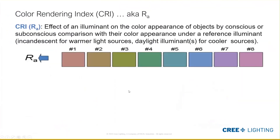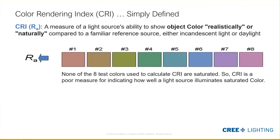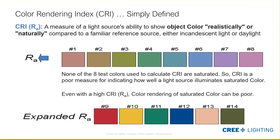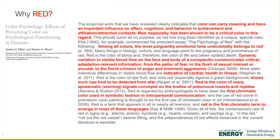CRI is simply a measure of a light source's ability to show object color reasonably, realistically, and naturally compared to a reference source. It's a comparison of how eight color palettes look under a reference illuminant versus the source you want to test — a comparative index and really no more than that. You'll notice the palettes are very pastel-ish and not very saturated. The system also allows you to expand into six additional categories, and the one that gets the most dialogue is R9 — the very, very saturated red.